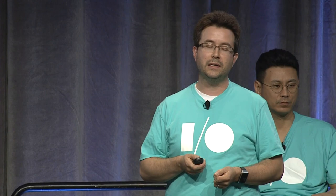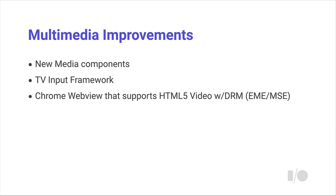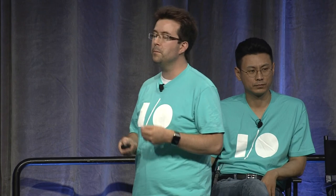We've done multimedia improvements, added new media components, and built a TV input framework — Andrew will go into great detail on that. We've switched to Chrome WebView, which supports HTML5 video with DRM. Android TV is completely Google Cast supported, so all Android TV devices will also be Google Cast receivers, meaning all existing Cast applications will just work. In L, we're adding APIs to allow your APKs to talk to each other through Cast — what we call Cast to native — enabling first-screen and second-screen experiences at equal levels.